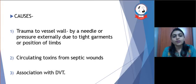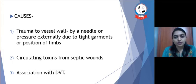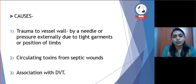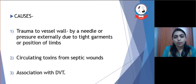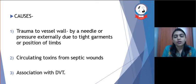Trauma to the vessel wall by a needle, or pressure externally due to tight garments or compression of the limb, can lead to SVT, i.e. superficial venous thrombosis. Circulating toxins from a septic wound — if a person has a septic wound anywhere — the circulating toxins may irritate the wall of the superficial vein and lead to thrombosis formation. There can also be an association with DVT, i.e. deep vein thrombosis. If a person has deep vein thrombosis, there are more chances of that person getting superficial venous thrombosis as well.